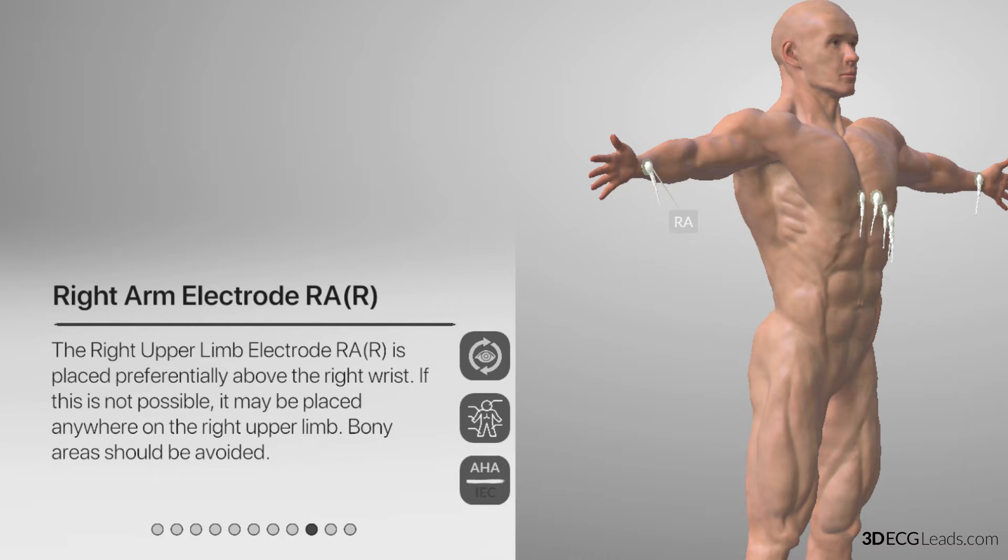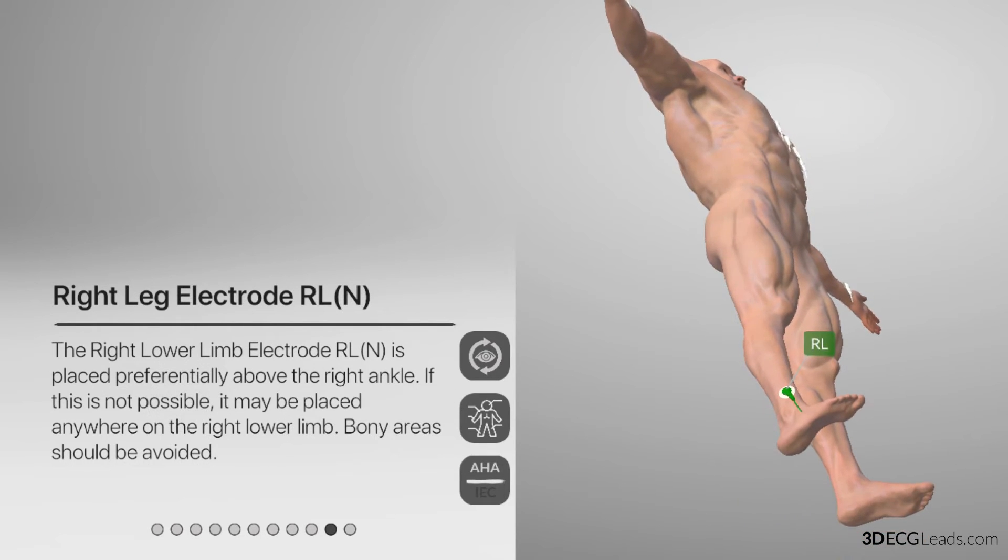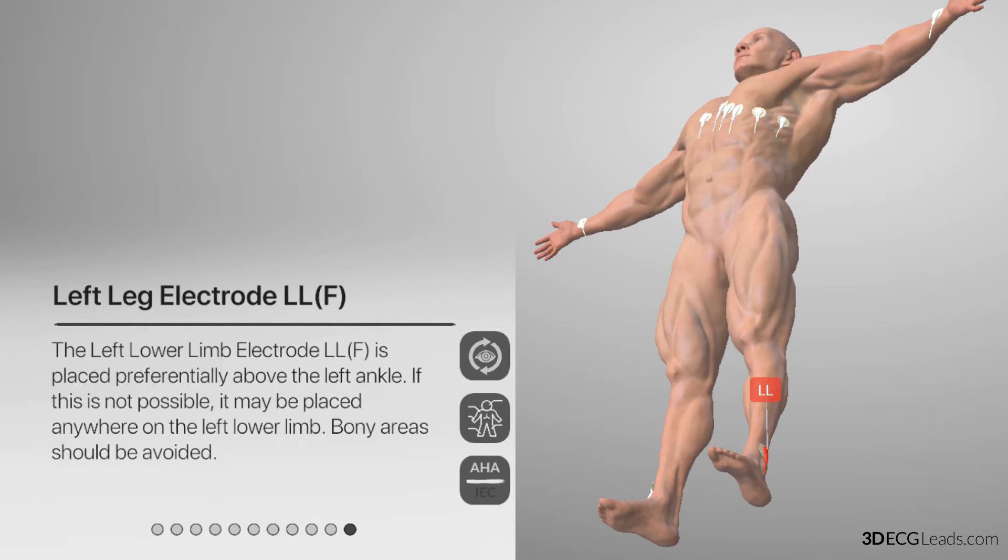Moving down to the right leg lead, it is green, and is named RL, and is placed slightly above the right ankle. And lastly, the left leg lead is red in color, and is named LL, and placed slightly above the left ankle.